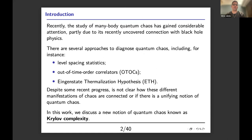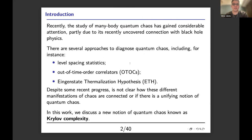Recently, the study of many-body quantum chaos has gained considerable attention, in part because of the uncovered connection with black hole physics. There are several approaches to diagnose quantum chaos — for instance, level spacing statistics, out-of-time order correlators, and eigenstate thermalization hypotheses. However, despite some recent progress, it's not super clear how these different manifestations of quantum chaos are connected, or if there is a unifying notion of quantum chaos. In this work, we discuss a new notion of quantum chaos known as Krylov complexity.